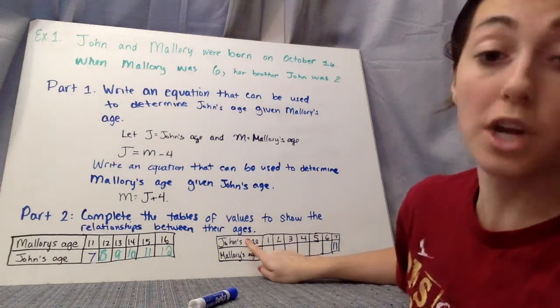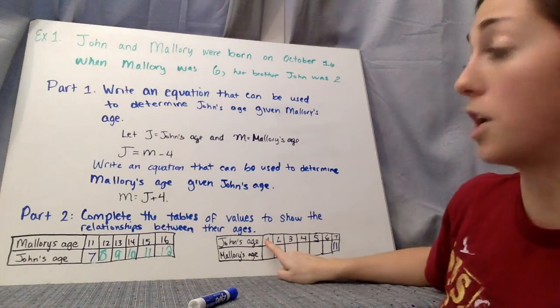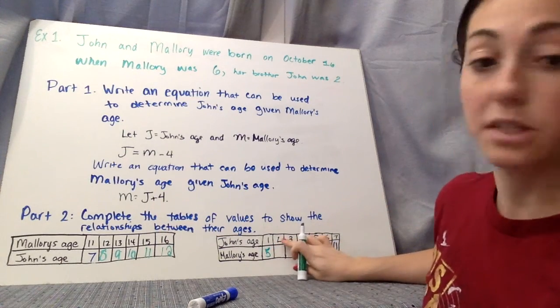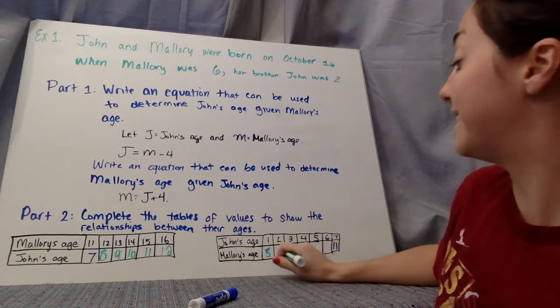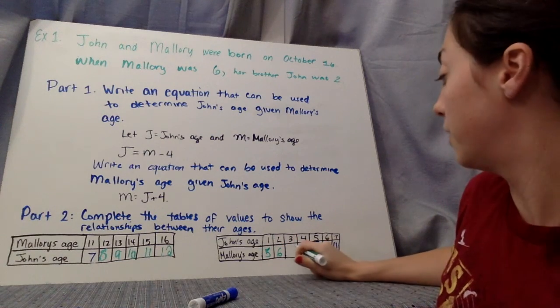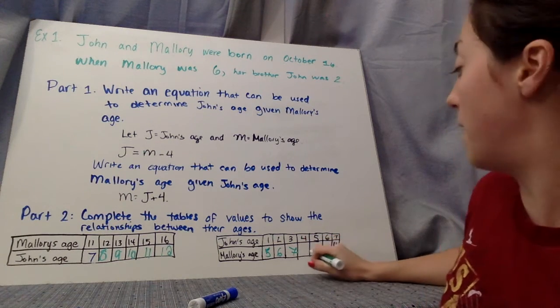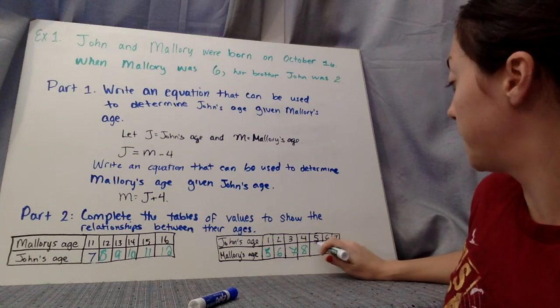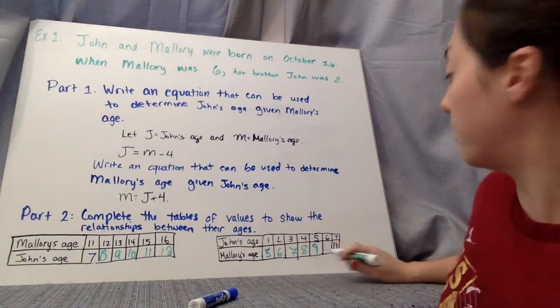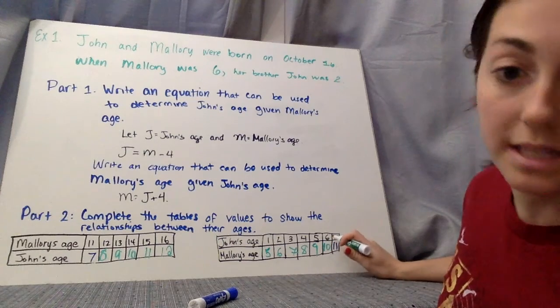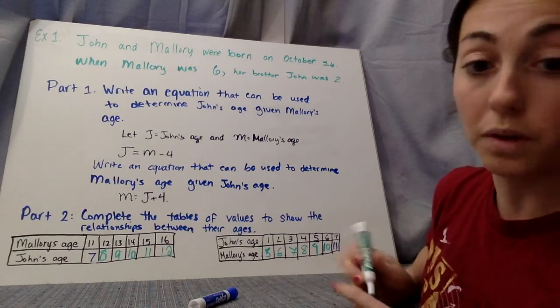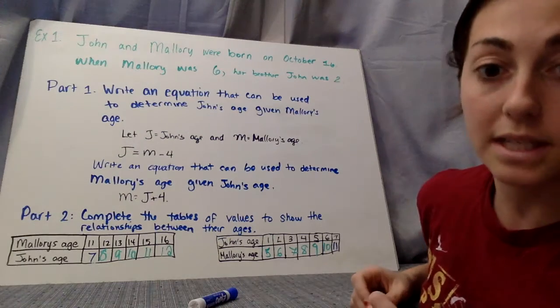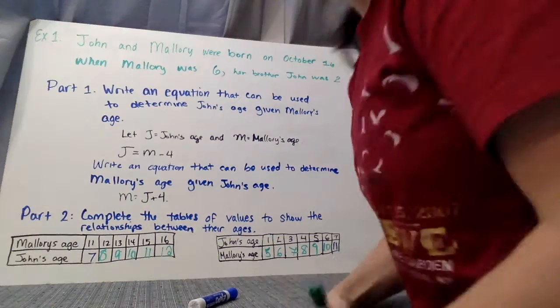And then we'll be able to talk about the relationship between their ages. All right, what if we're given John's age? That was our second equation. So if John is 1, how old is Mallory? Well, 1 plus 4 is 5. If John is 2, how old is Mallory? 6. Good. If John is 3, 7. If John is 4, Mallory is 8. If John is 5, Mallory is 9. If John is 6, Mallory is 10. And if John is 7, Mallory is 11. Cool. So again, another set of data that we can talk about. So get all this down. Hopefully it makes sense. We've got just two more questions to talk about.